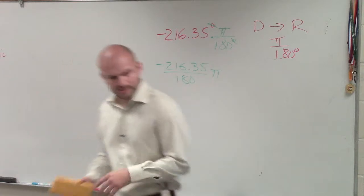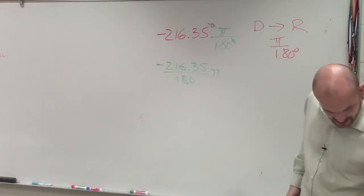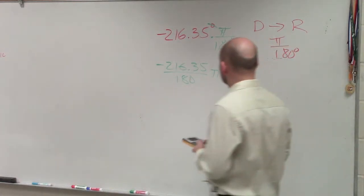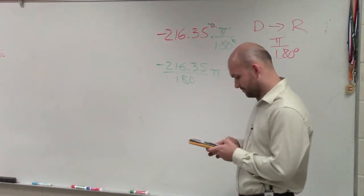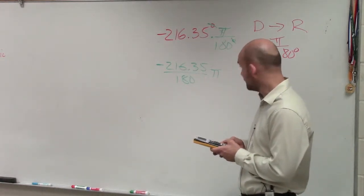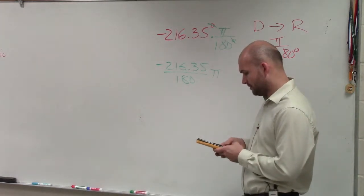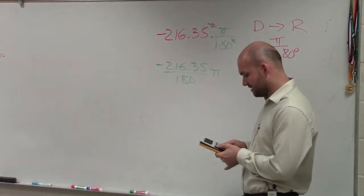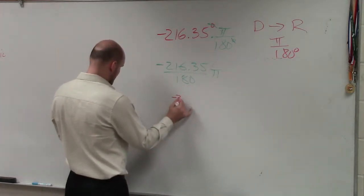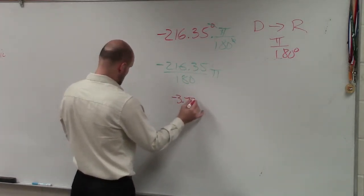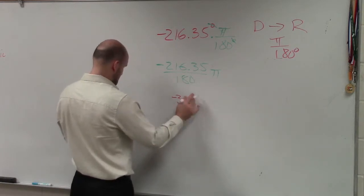So all I'm saying I'm going to do is just take my calculator. It says round to three decimal places. So I'm just going to take negative 216.35 divided by 180 times pi. And rounded to three decimal places is negative 3.776.